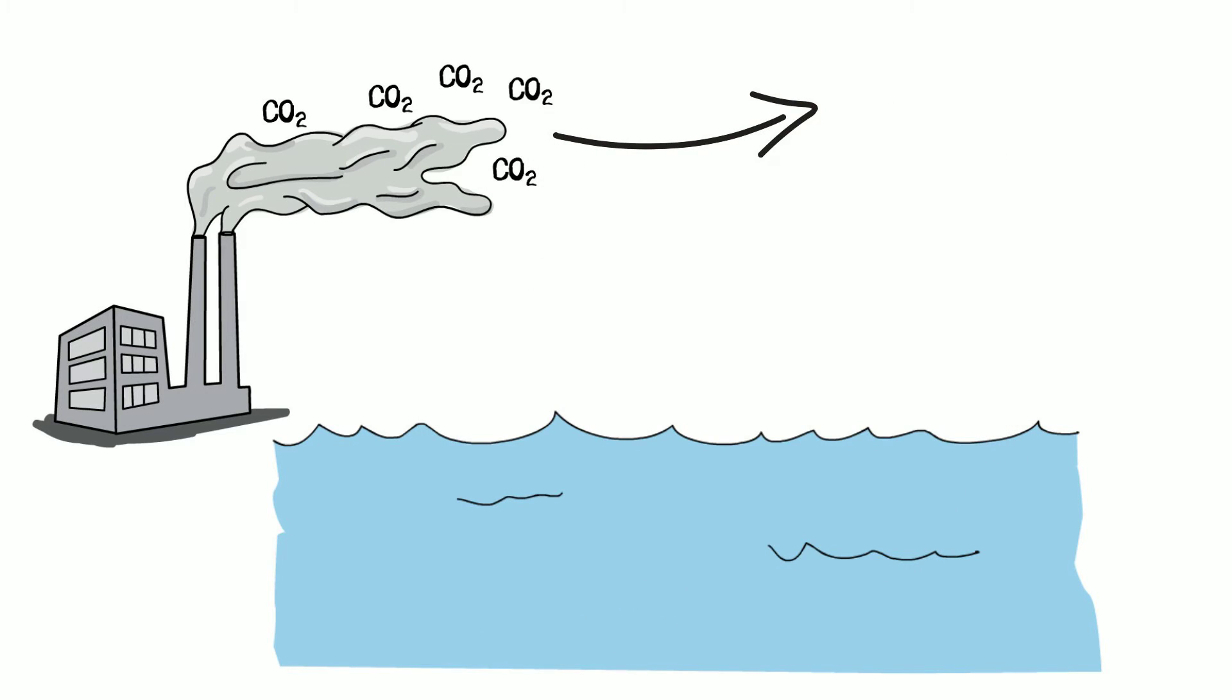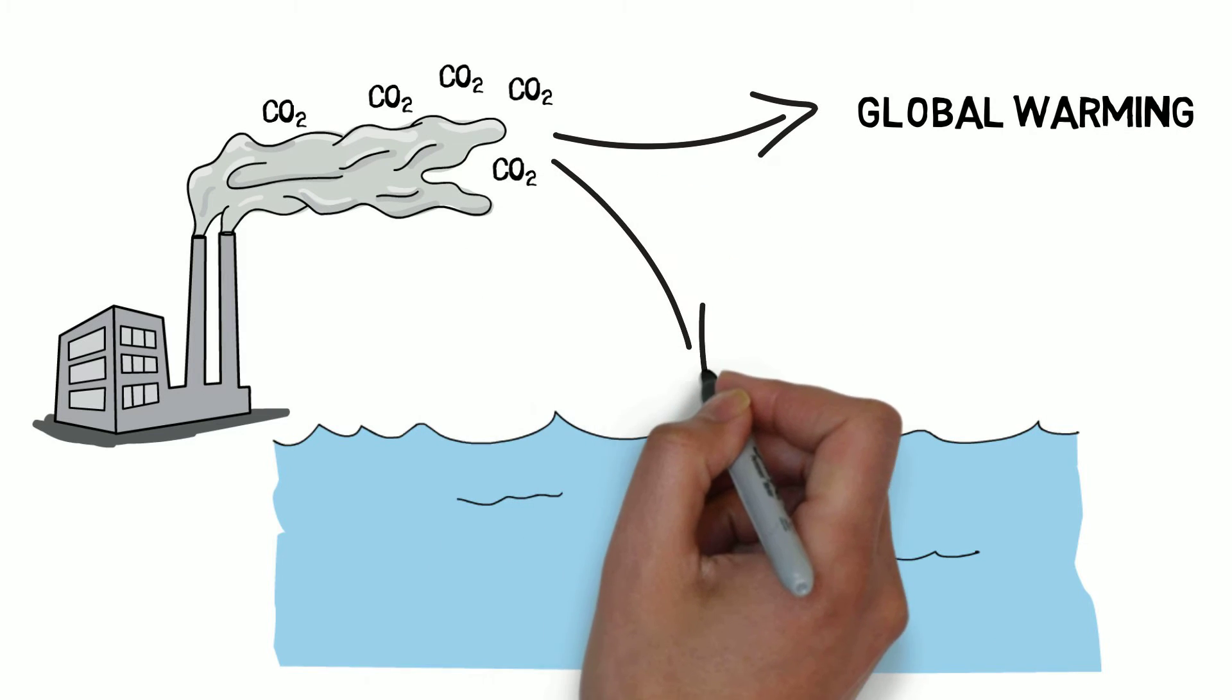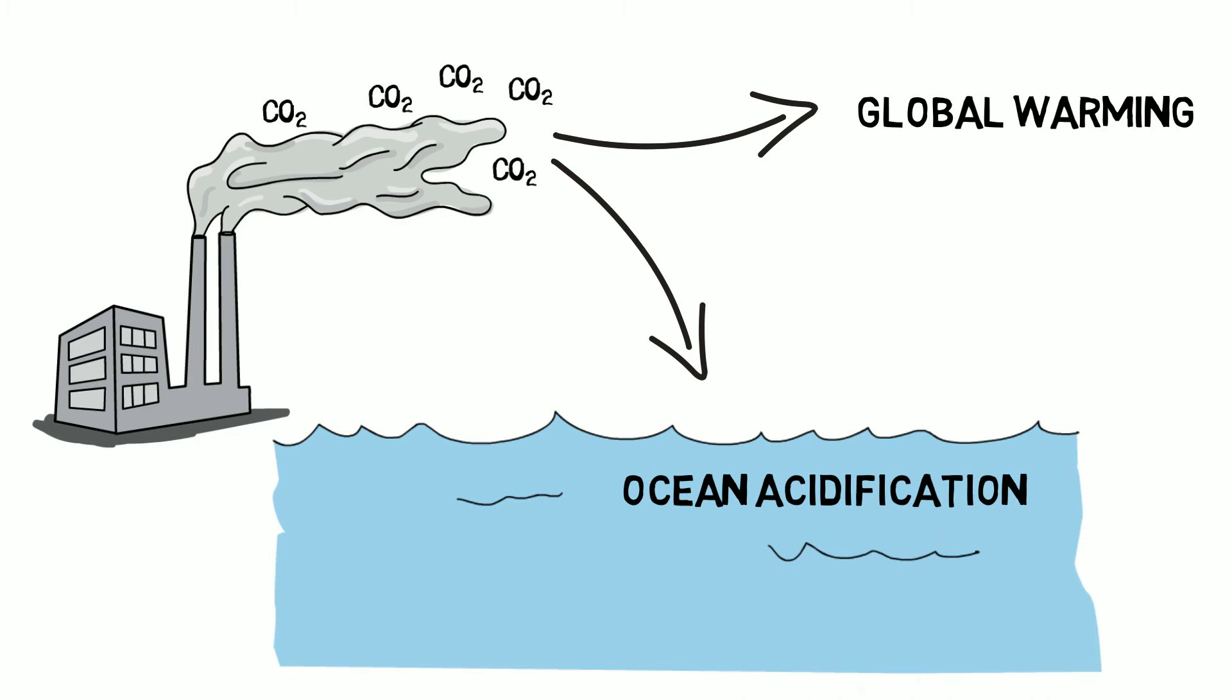All the carbon that humans release in the air not only makes the planet warmer, but also dissolves in the ocean, making it more acidic in a process called ocean acidification.